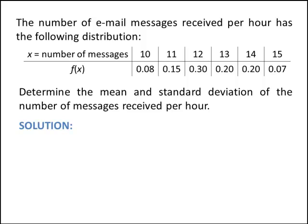So let's look at the example. We're given the distribution of the number of messages received per hour. So this given person, it looks like they've received between 10 and 15 email messages per hour. And we're given the associated probability that goes with each of these x values. So the probability they get 10 calls in an hour is 8%, 11 calls in an hour is 15%. It's also nice to check that this is a valid probability mass function.